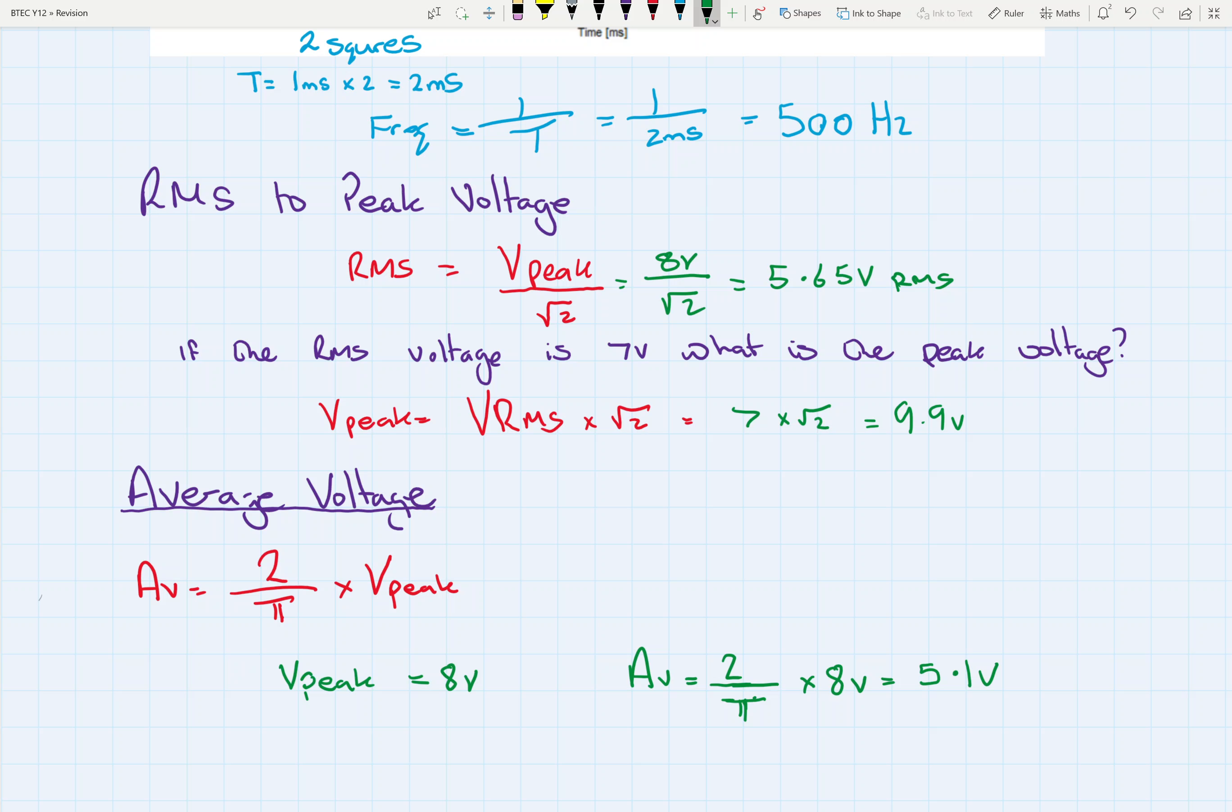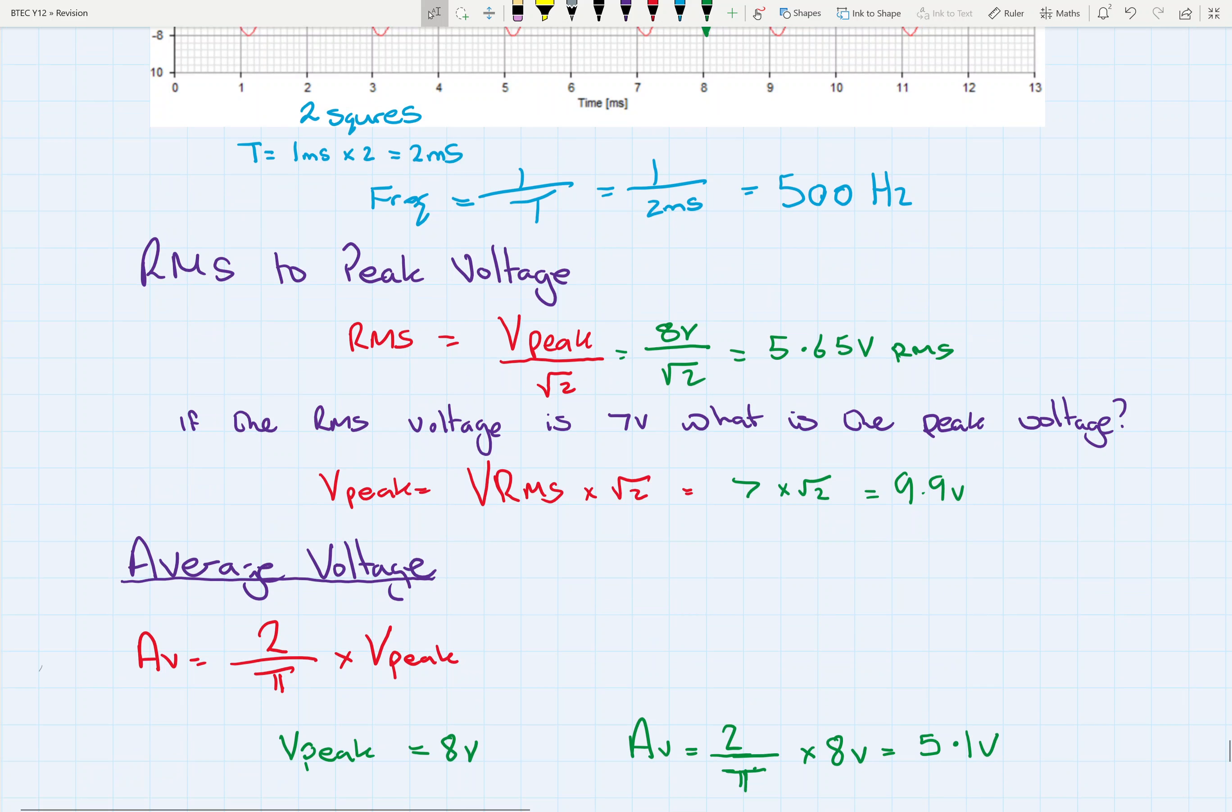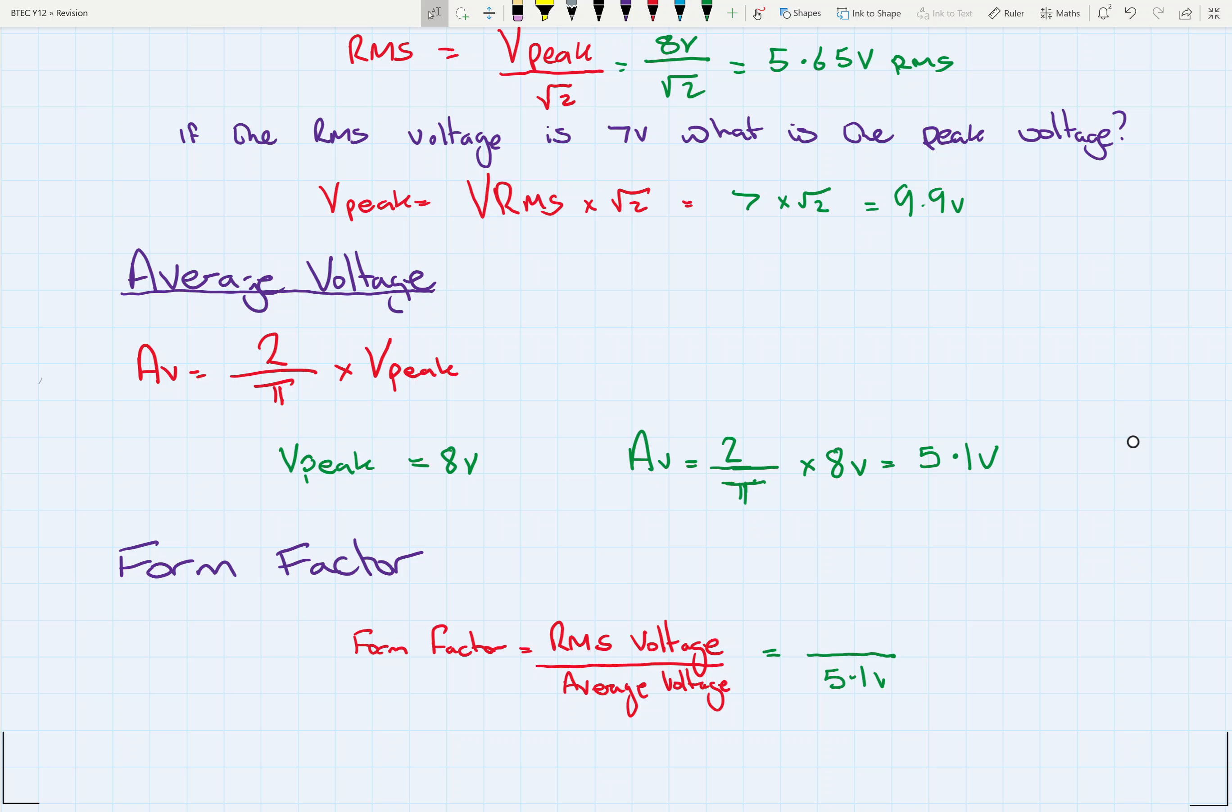And one last calculation then, just for the sake of it, I think more than anything else, we've got what's called form factor. So we've got RMS voltage over our average voltage. So we've just worked out the average voltage when we had a peak voltage of 8 volts, which was 5.1 volts, and the RMS voltage was 5.65 volts. So that gives us a form factor of 1.1.